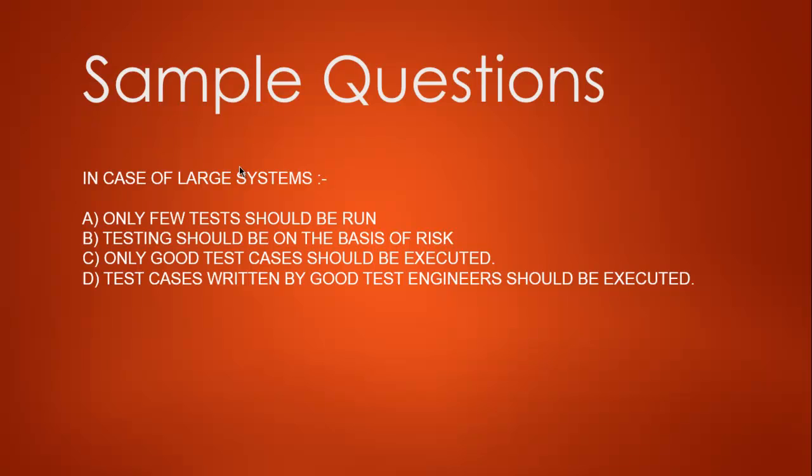Option B — testing on the basis of risk — is true because large systems have a lot of risk across multiple modules, so we should run tests based on risk priority. Option C is vague since we have no clear measure of whether test cases are 'good enough' for a large system. Option D is similarly flawed — we can't determine who is a 'good' test engineer for a system not yet tested. The correct answer is B: testing should be on the basis of risk. I hope you enjoyed these five questions and will stick around for more ISTQB Foundation Level exam sample questions.